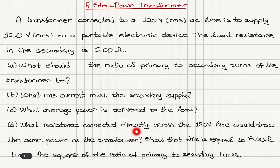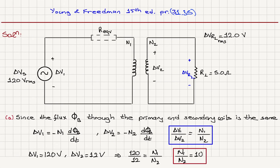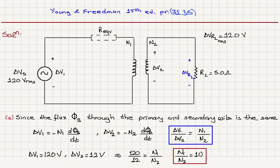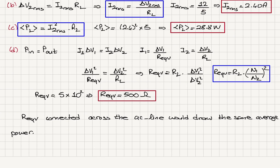What resistance connected directly across the 120V line would draw the same power? Input power equals output power: I1 times delta V1 equals I2 times delta V2. Writing I1 as delta V1 over R_equivalent and I2 as delta V2 over R_load, the equivalent resistance is the load resistance times (delta V1 over delta V2) squared, which is R_load times (N1/N2) squared — giving 500 ohms. This equivalent resistance connected across the AC line draws the same average power as the transformer.